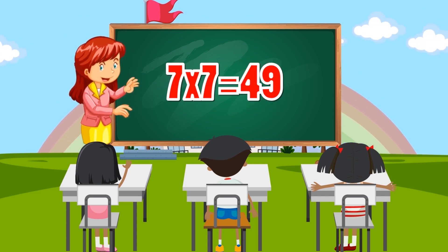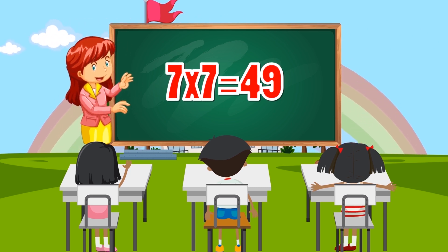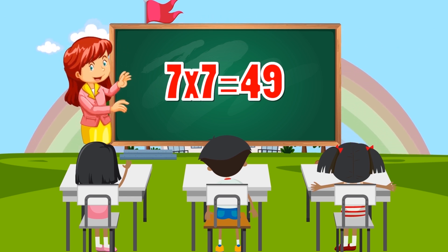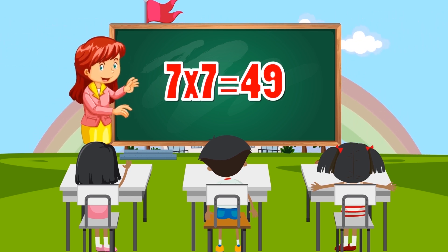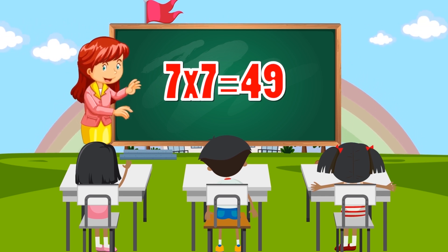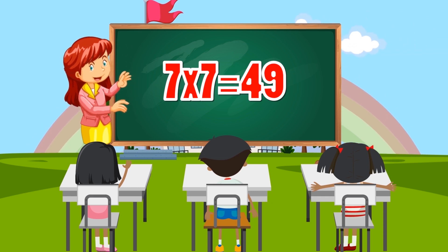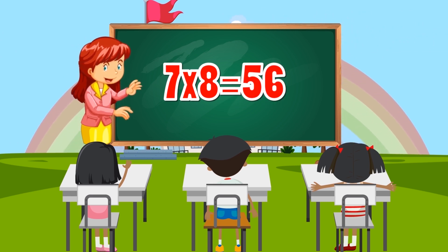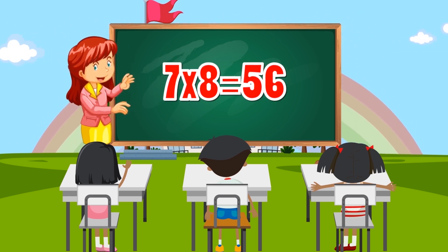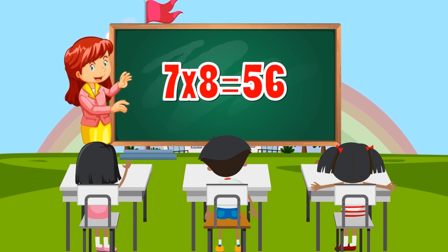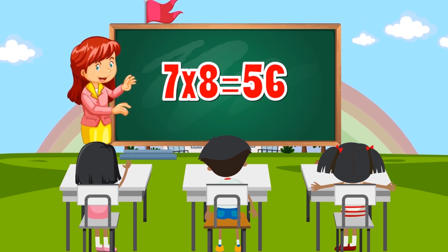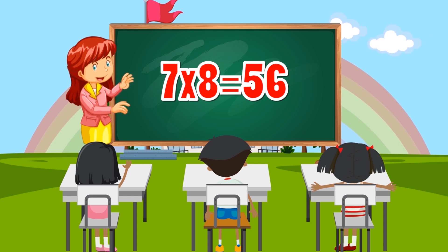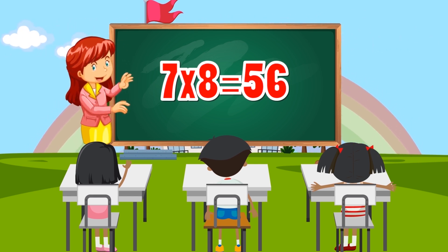7 times 7 equals 49. 7 times 8 equals 56.